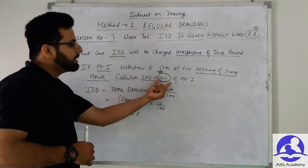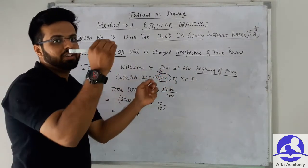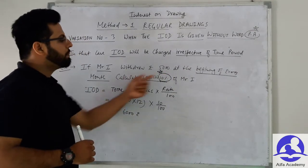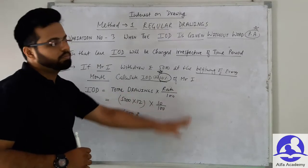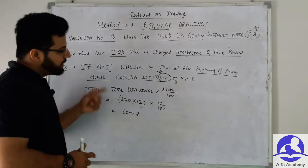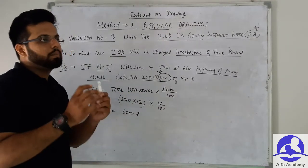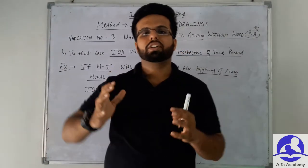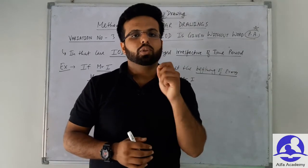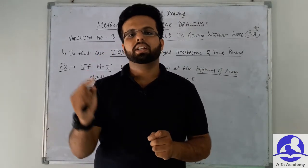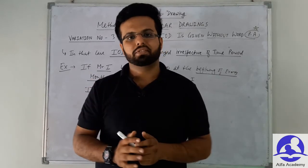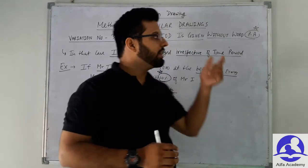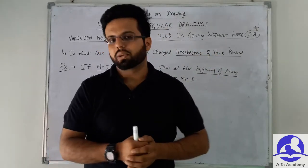Remember: when 'per annum' is given, use average months/12 as done in the first video. When 'per annum' is not given, you do not need to calculate average months/12. Interest on drawing is calculated irrespective of the time period. This is a common mistake — students see the question and apply average months, but that should only be done when 'per annum' is specified.